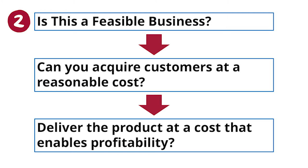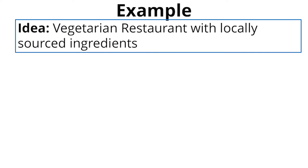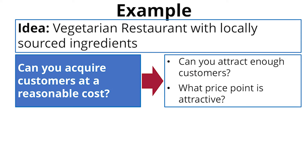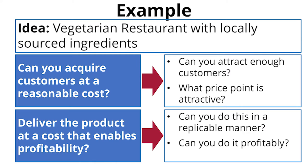Using the restaurant example, Clover wants to make everything from locally sourced ingredients. Can you possibly have a restaurant that attracts enough users that's both vegetarian and local and reasonably priced? Their task is to prove that that's actually possible — and possible in a way that you can then replicate a thousand times.